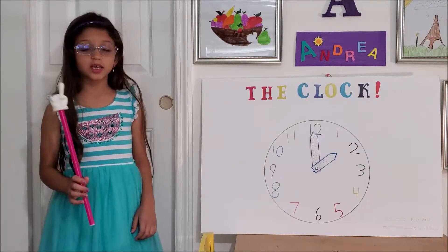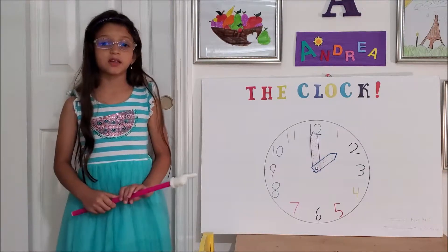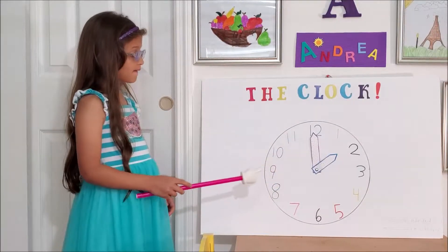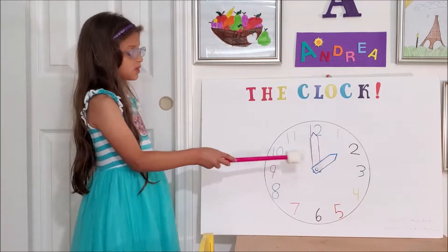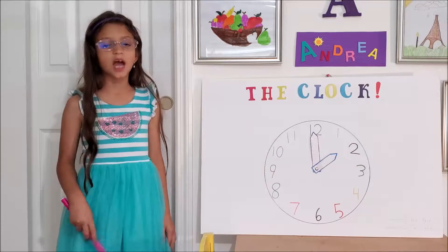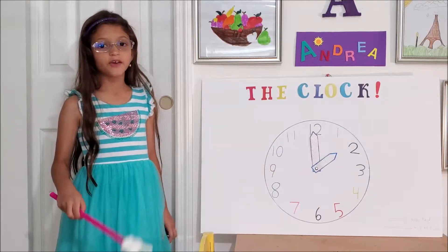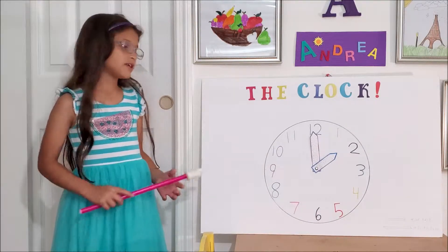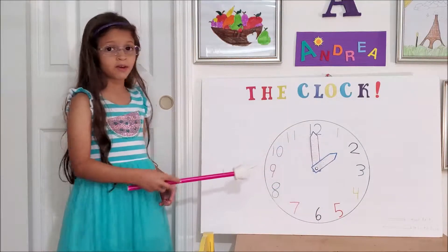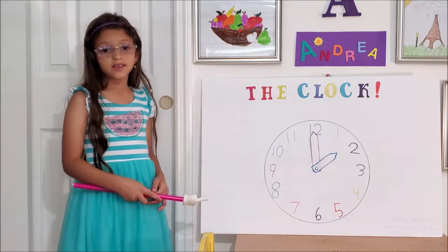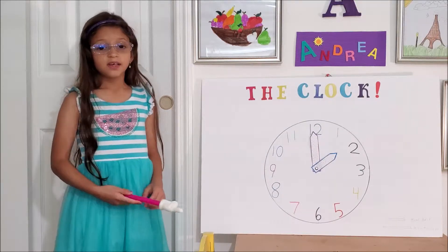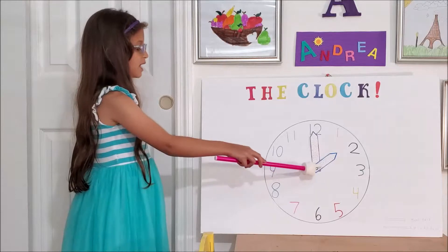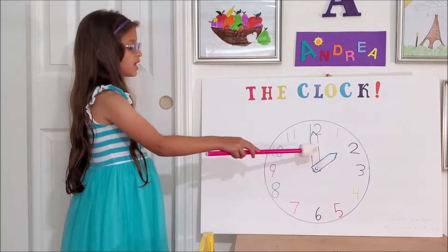I'm going to show you the difference between those two clocks. The analog clock uses hands to describe what time it is. Not all analog clocks have numbers like this one. Some have lines and some don't have numbers or lines at all. They just have the hour hand and the minute hand.